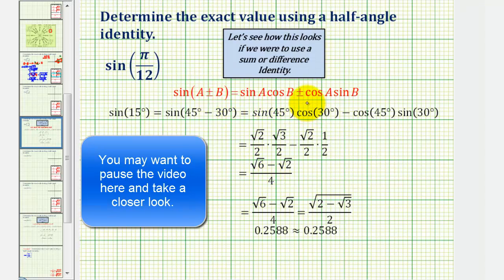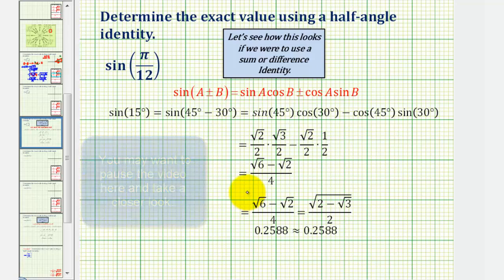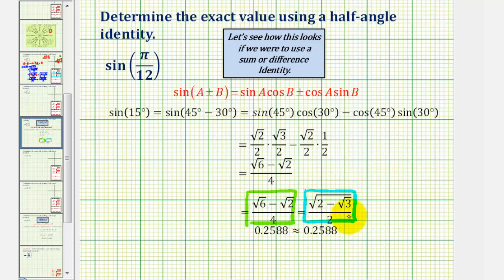So using the difference identity for sine, this was the exact function value. And when we use the half-angle identity, this was the exact trig function value. Again, they look quite different. So if we convert them into decimals, we can see they are the same. So depending on what method we use to find the exact value of sine fifteen degrees, or sine pi divided by twelve radians, the result will look different, but the function values are the same.